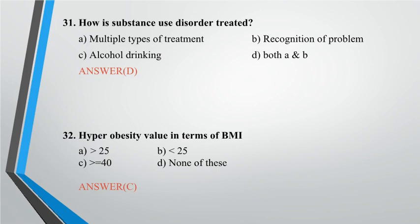Question 32: Hyper obesity value in terms of BMI — A. Greater than 25, B. Less than 25, C. Greater than or equal to 40, D. None of these. Answer: C.